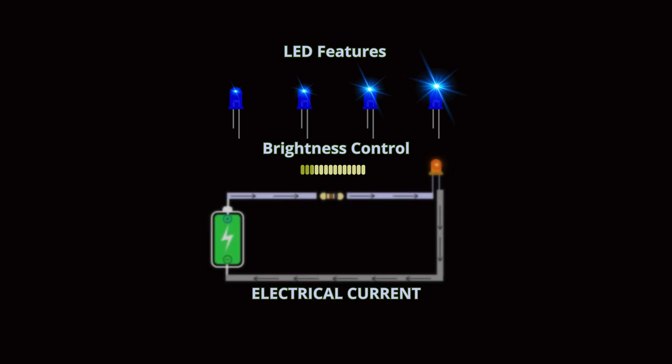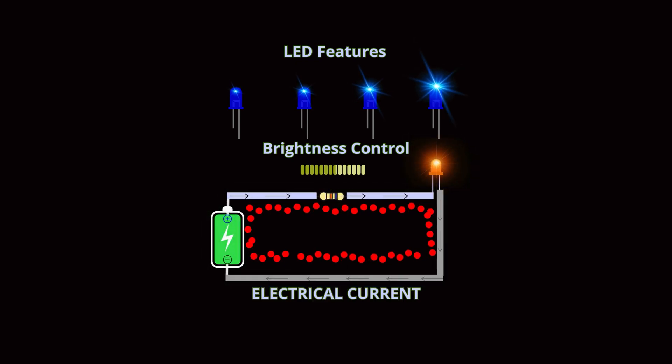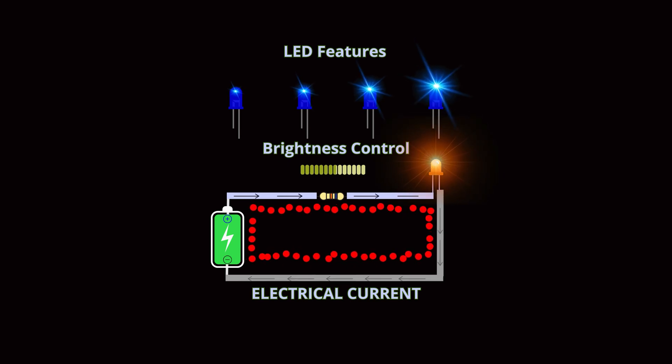One of the most interesting features of LEDs is the ability to control brightness. The brightness of an LED is directly related to the amount of electrical current flowing through it. More current means more electrons are moving and releasing photons, which increases the light output.